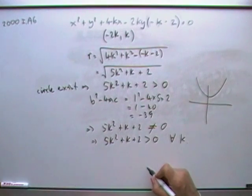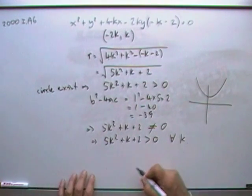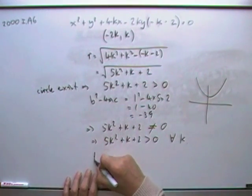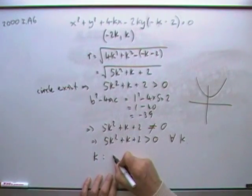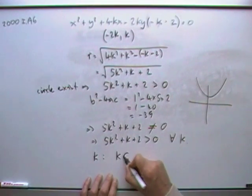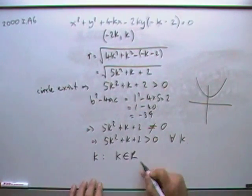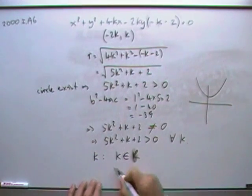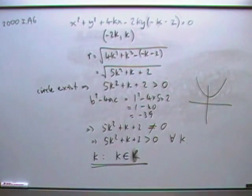So how would you express that answer? What's the range of k? Well, the range of k would be: you're looking for k such that k can be anything, k can be any real number. Or you could just write in words all values of k.